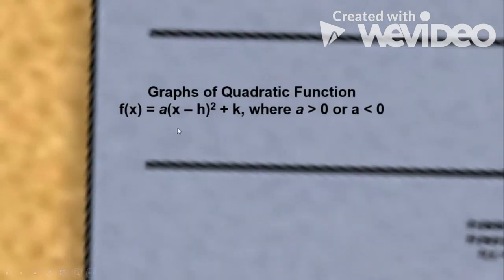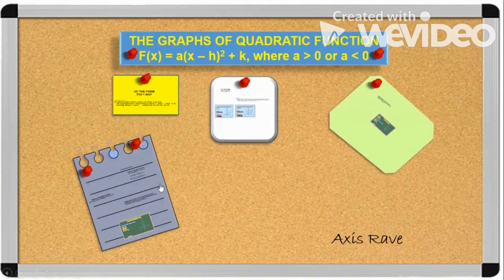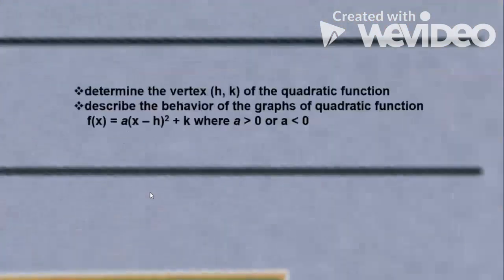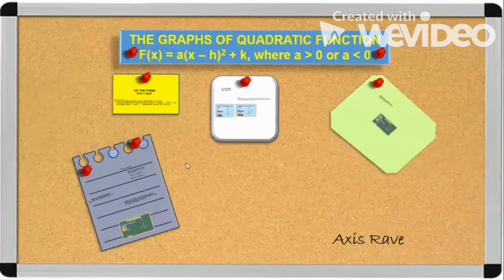This time, we are going to discuss the graphs of quadratic functions in the full vertex form: a(x - h)² + k, where a is greater than 0 or a is less than 0. After our discussion, you will learn how to determine the vertex of the quadratic function and describe the behavior of its graph.